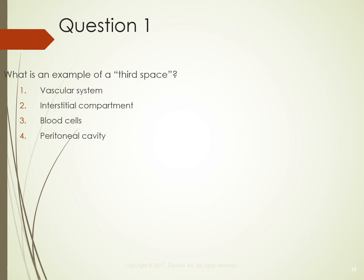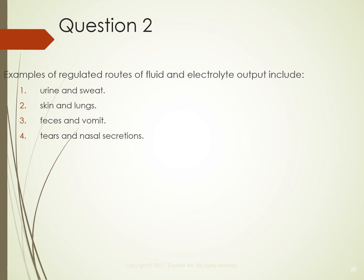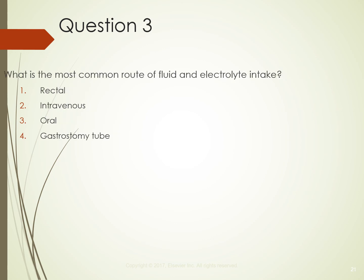Review questions: An example of a third space is the interstitial compartment. Examples of regulated routes of fluid and electrolyte output include urine, sweat, skin and lungs, feces, and vomit — not tears or nasal secretions. The most common route of fluid and electrolyte intake is oral.